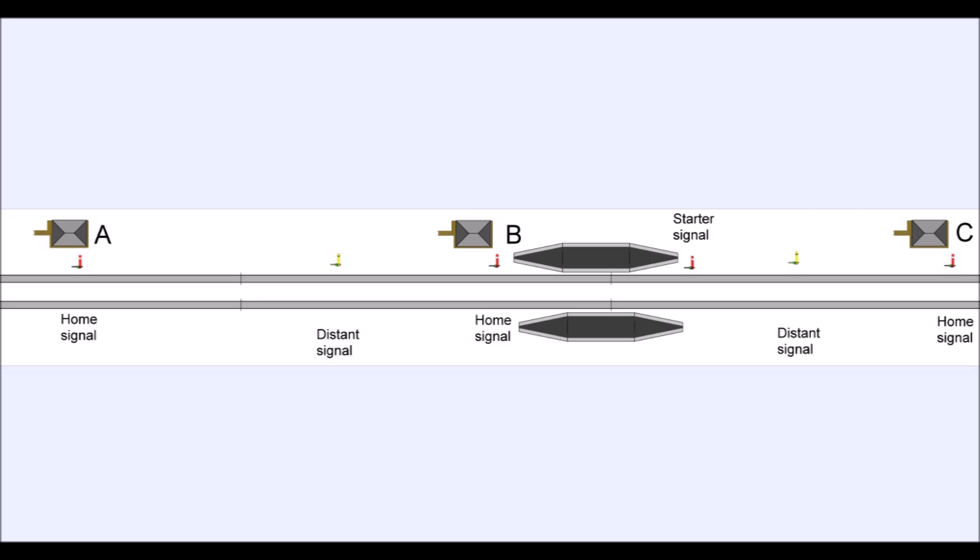If either of those is in the stop position, the distant can't be pulled off. So the starter signal at the end of the platform really is the entrance then into the next section between B and C.